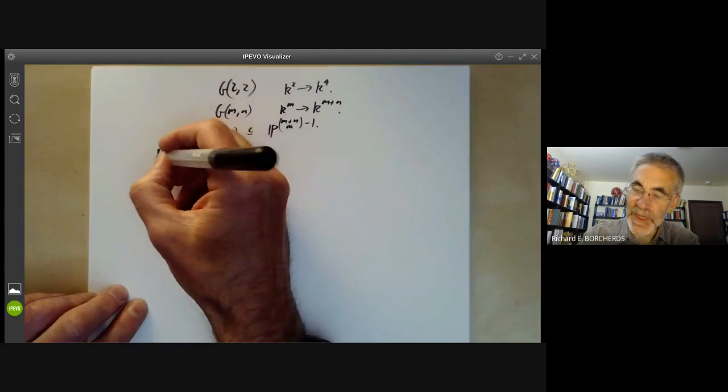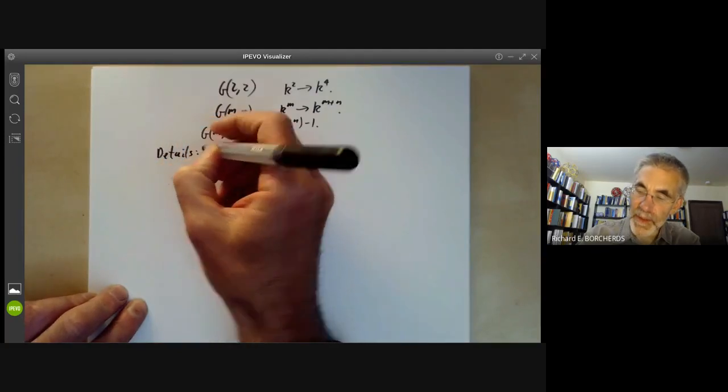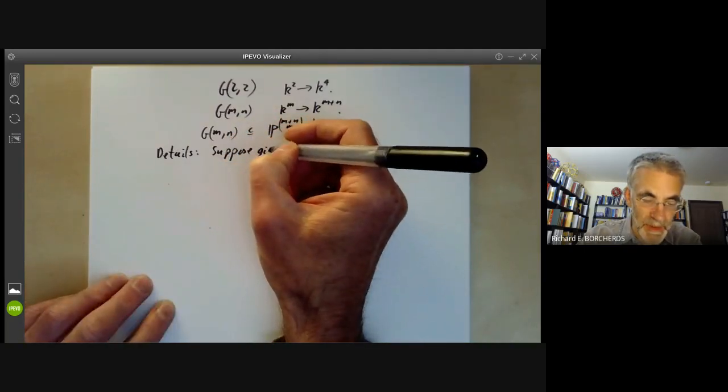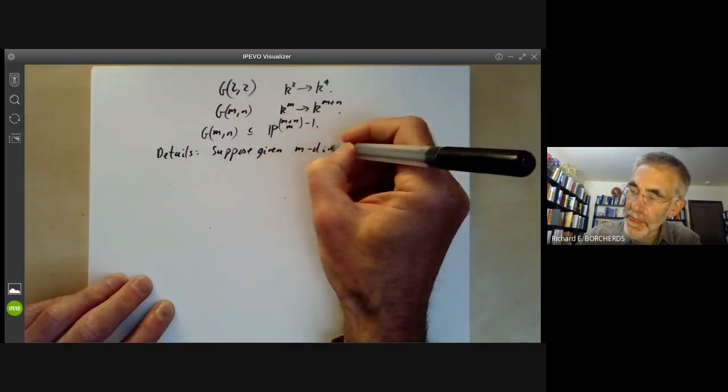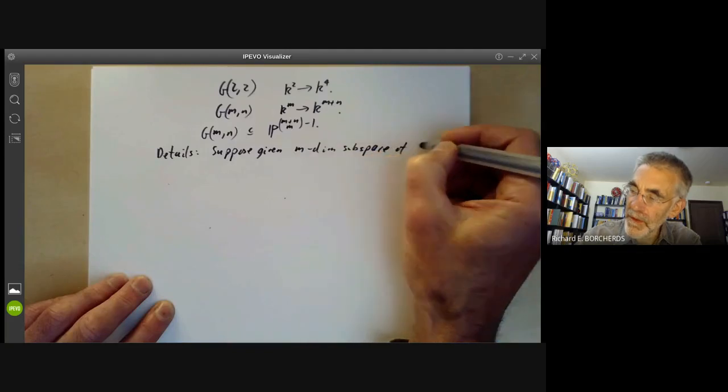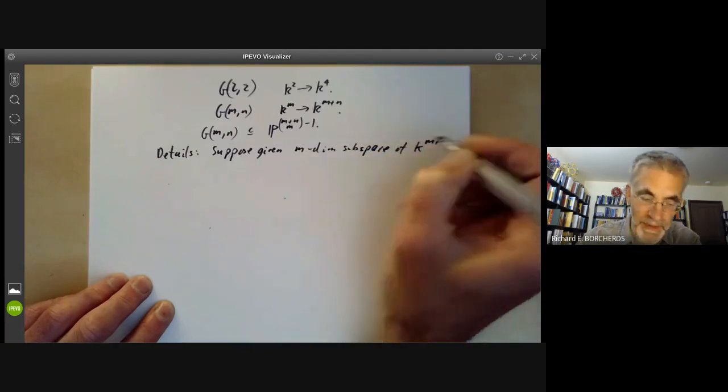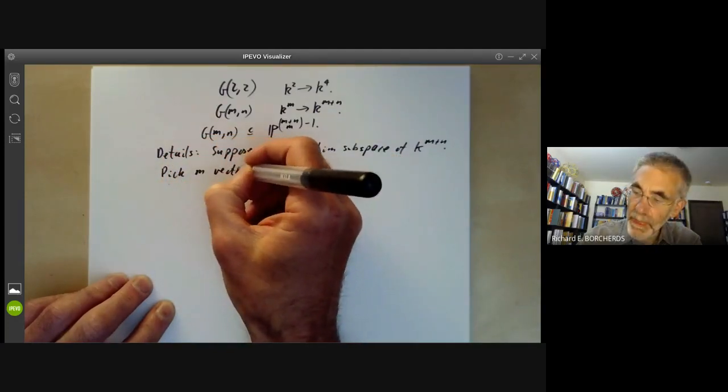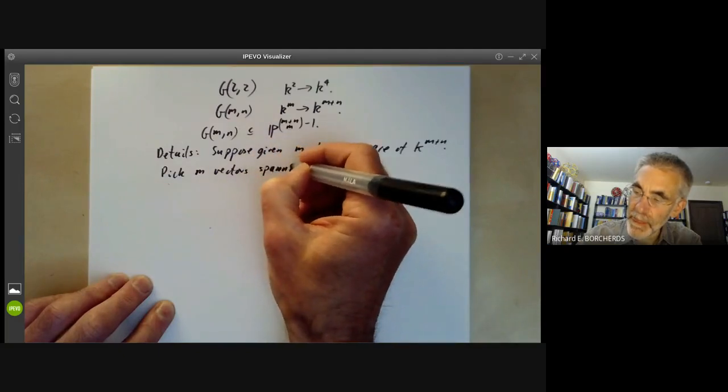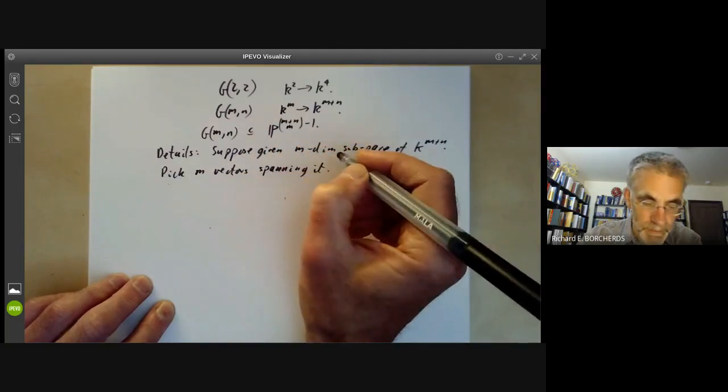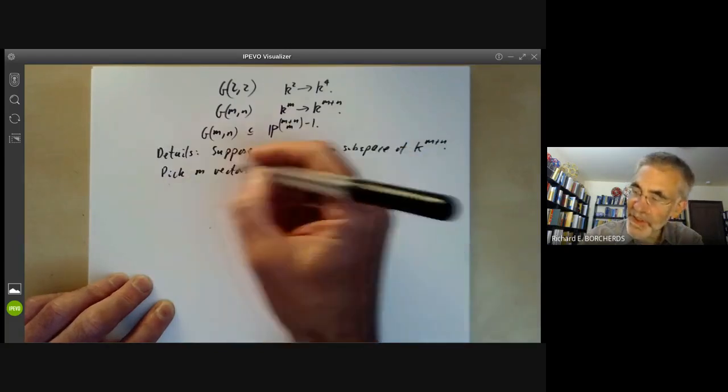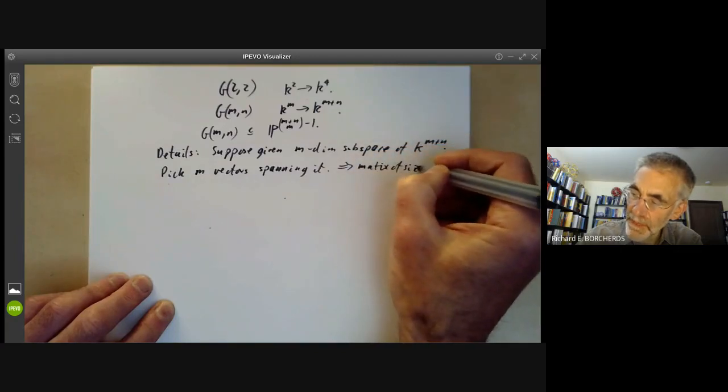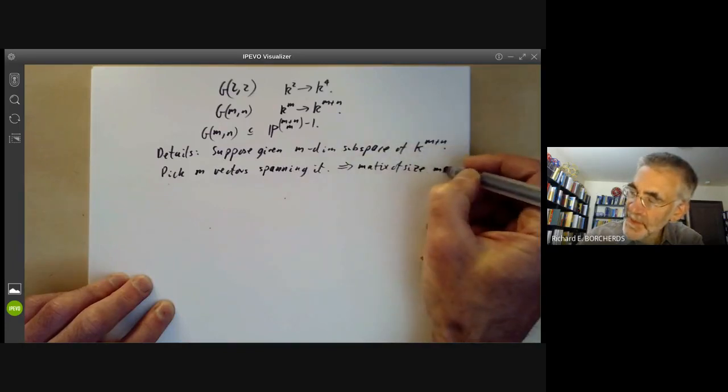So how do we do this? Well, suppose given some M-dimensional subspace of the vector space K^(M+N). What we do is we pick M vectors spanning it, which gives a matrix of size M times M+N.